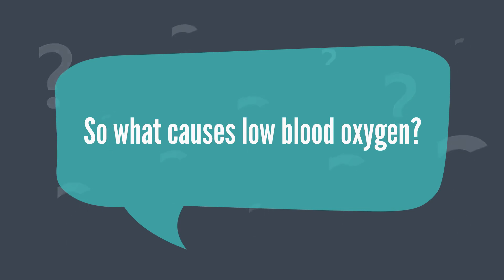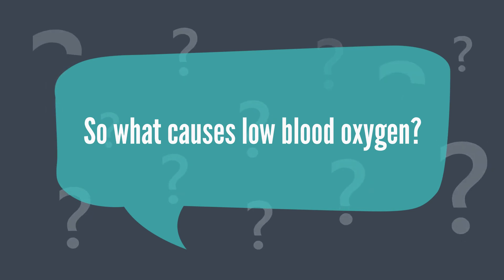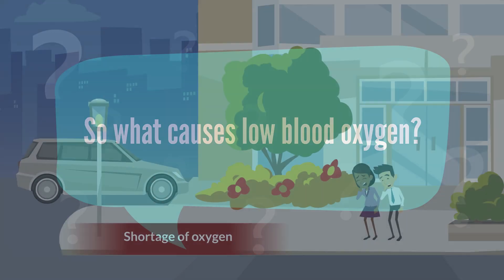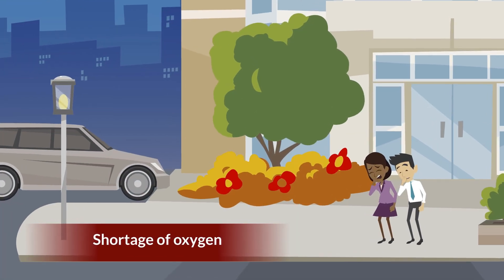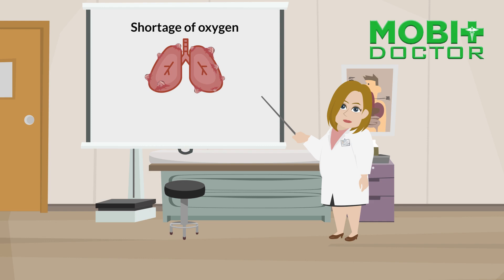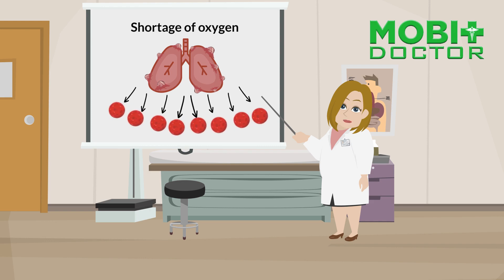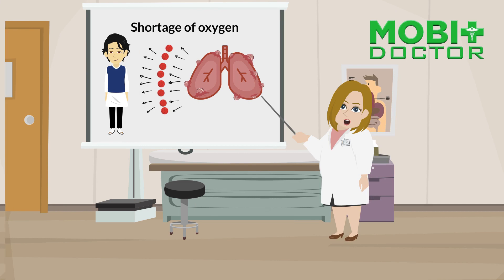So what causes low blood oxygen? A shortage of oxygen in the atmospheric air, the lungs' incapacity to draw in enough oxygen and distribute it to cells and tissues, and the bloodstream's inability to gather oxygen from the lungs and deliver it throughout the body.